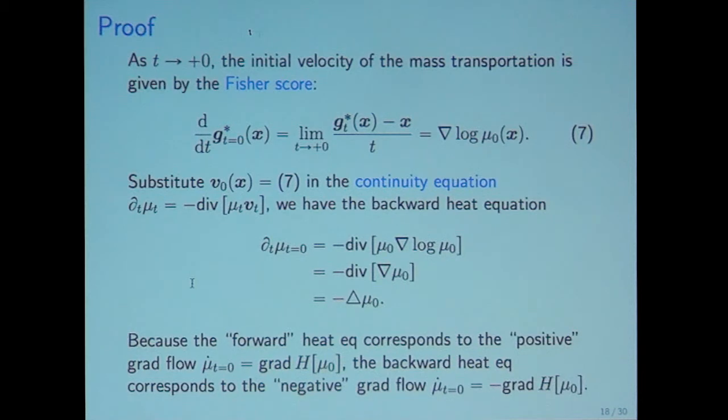Then substitute V zero. This is flux in the continuity equation: mu dot T equals minus divergence mu T V T. Then we have the backward heat equation. The continuity equation explains the relation between the flux and time evolution of mass density.